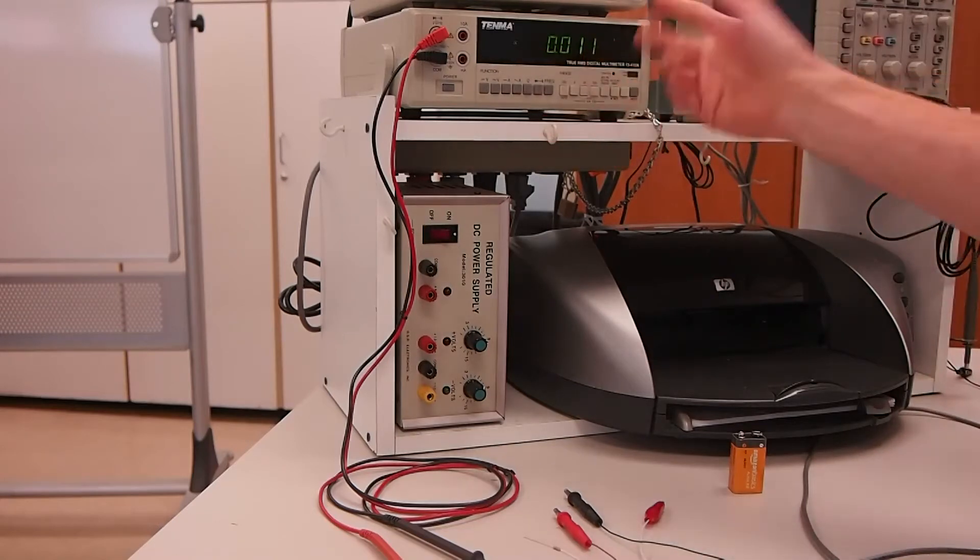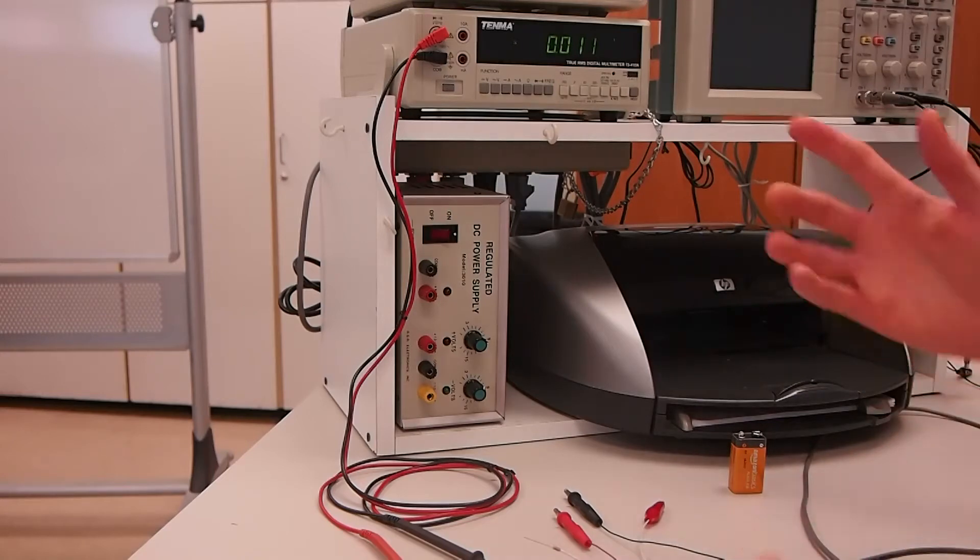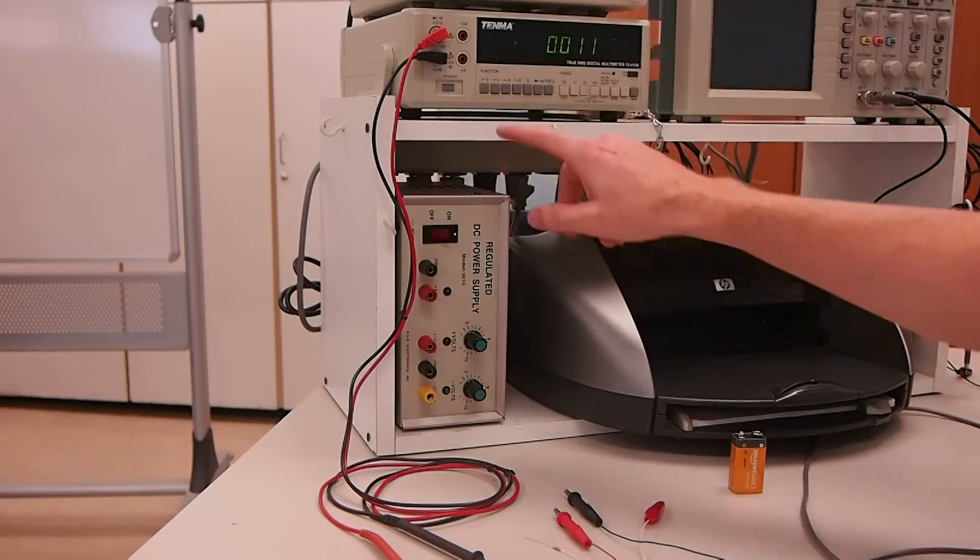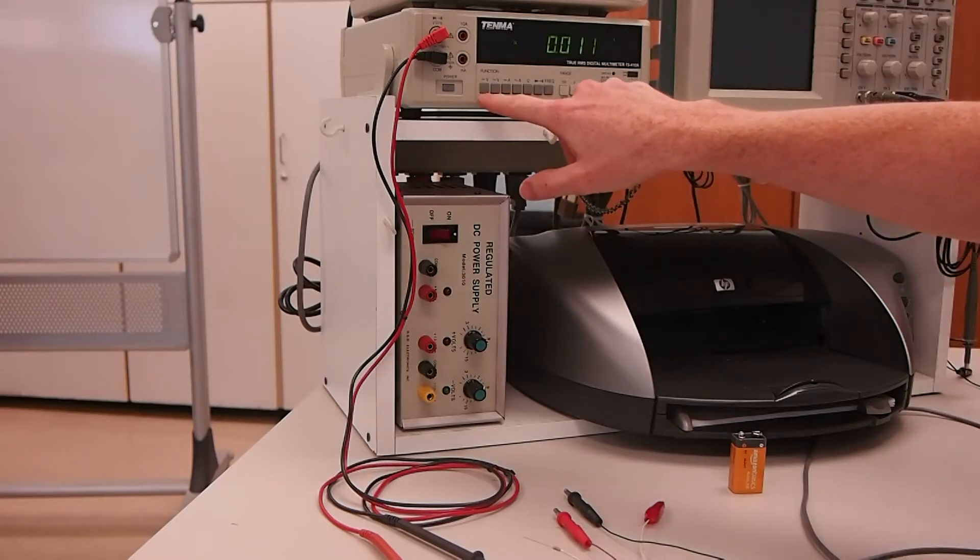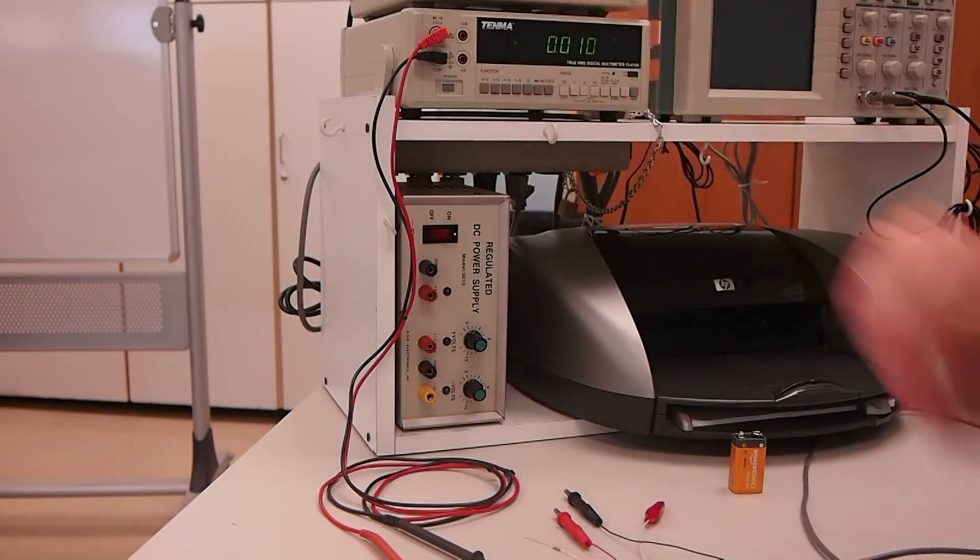You should see some green digits showing up here with whatever measurement it's taking. The multimeter can measure a bunch of different electrical things. Here we're going to measure DC voltage, so that's this first button. But I can also measure AC voltage, DC and AC current, and resistance, which we'll do in a minute.